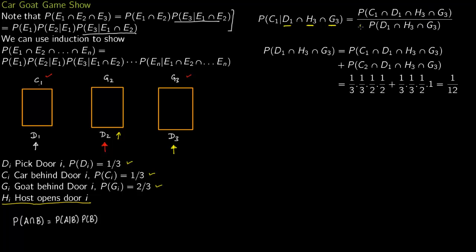Let us first focus on the denominator: probability of D1 intersection H3 intersection G3. The contestant has picked door 1, the host has opened door 3 and found a goat. Since host has opened door 3, the car can be either behind door 1 or door 2. So we express this as a disjoint union intersected with car behind door 1 and car behind door 2.